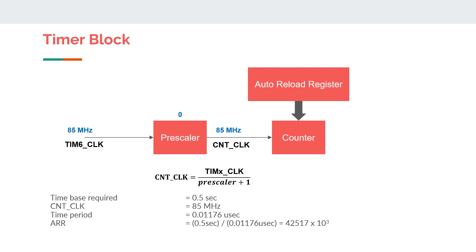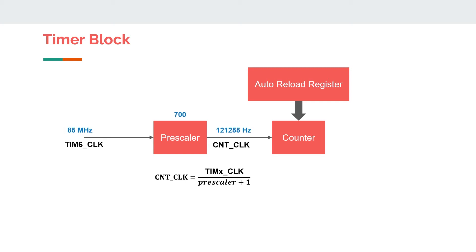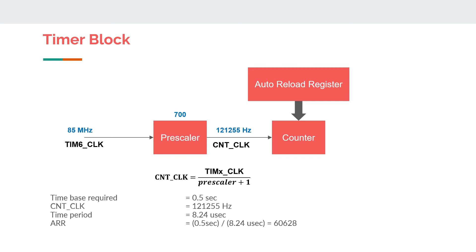So in this case, we have to reduce the value we got by increasing the prescaler, or decreasing the count clock. We can try a prescaler of 700. Following the same procedure, we get an auto reload register value of 60628, which is a valid value because it is less than 65535. Now we have got what we wanted. Take a deep breath — end of all calculations.